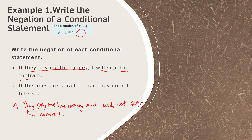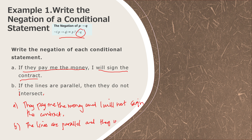Next, letter b: 'If the lines are parallel, they do not intersect.' Here p is 'the lines are parallel,' and the negation of q — since the negation of 'they do not intersect' is 'they intersect' — gives us: the lines are parallel AND they intersect.